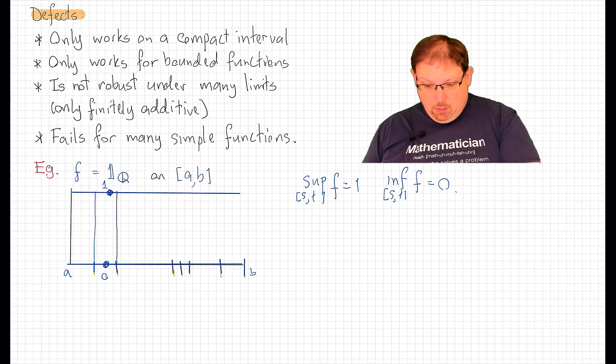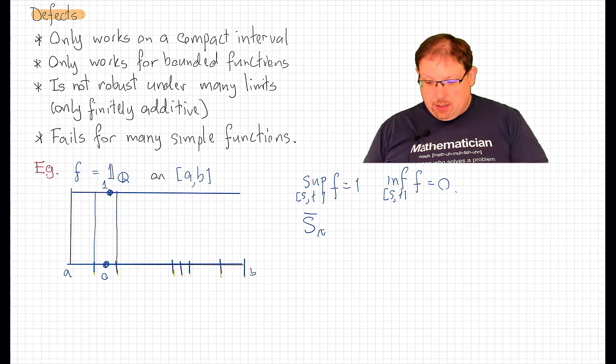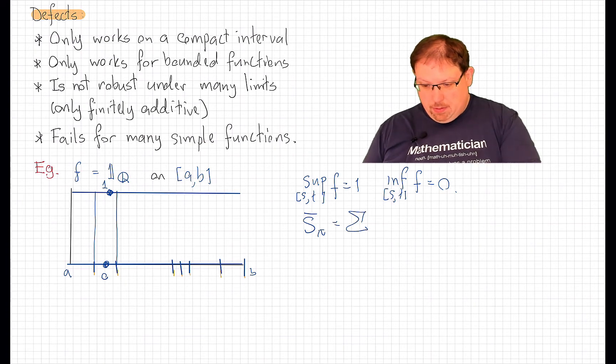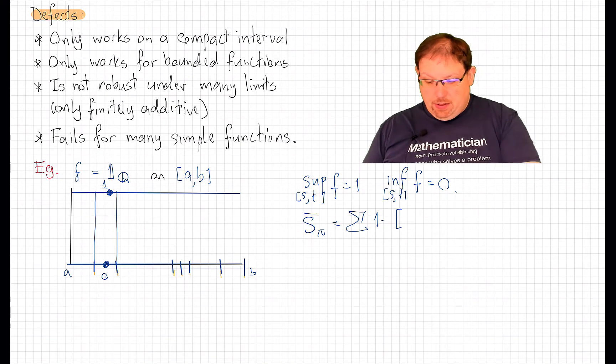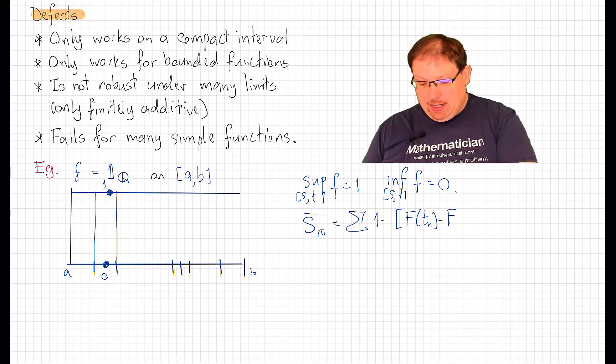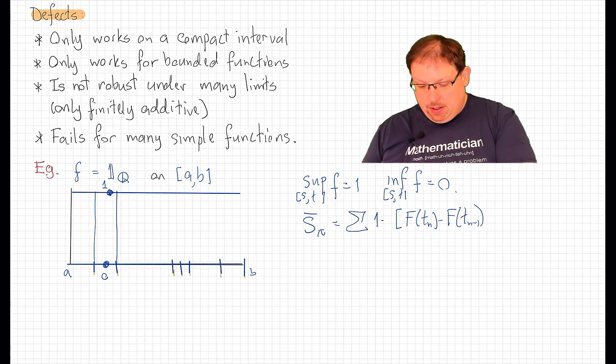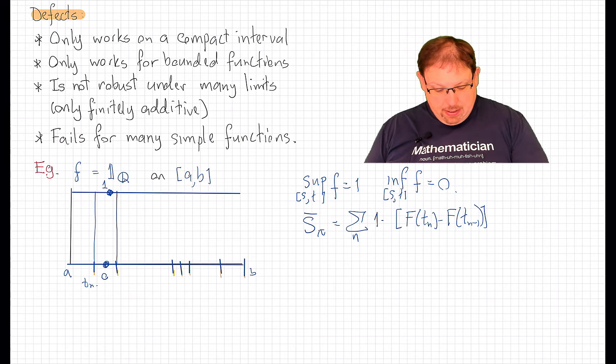which means that the upper sum on any partition is going to be the sum of 1 times the Stieltjes measure of that interval, which is f at t_n minus f at t_{n-1} if the interval in question goes from t_{n-1} up to t_n.